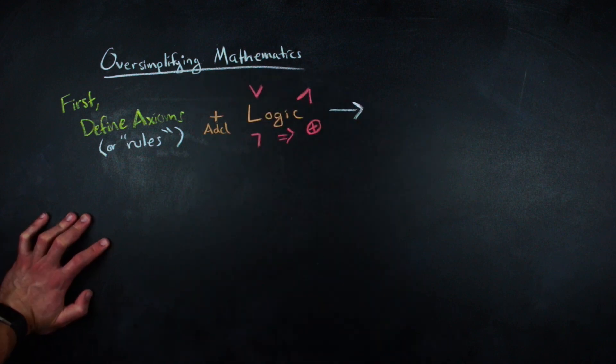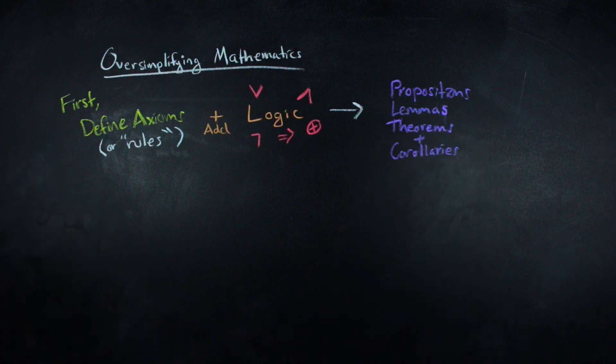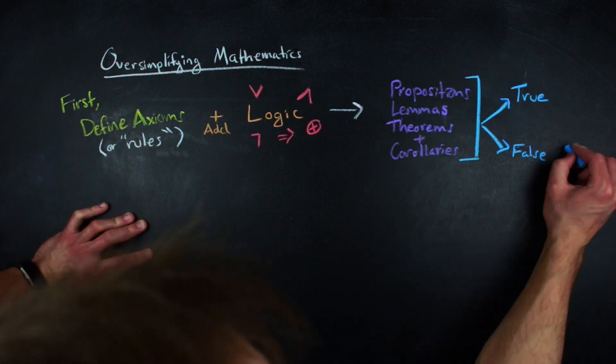All the theorems, propositions, lemmas, and corollaries that arise are born out of two things: whether or not something is true or false.